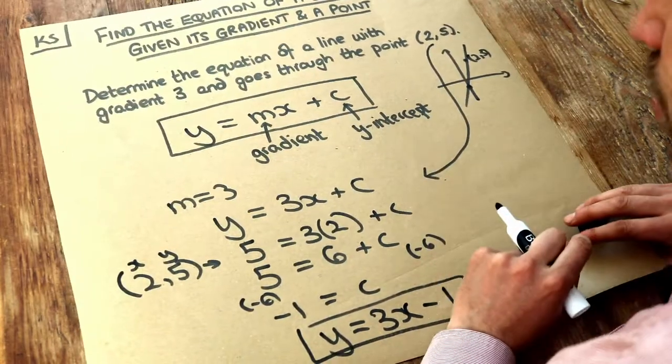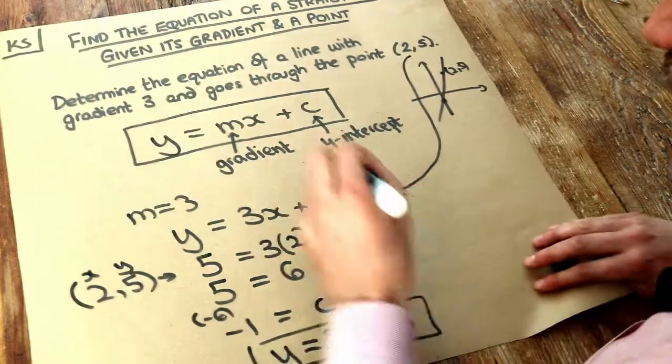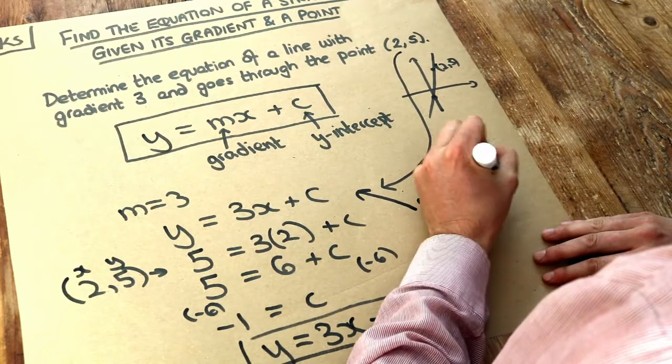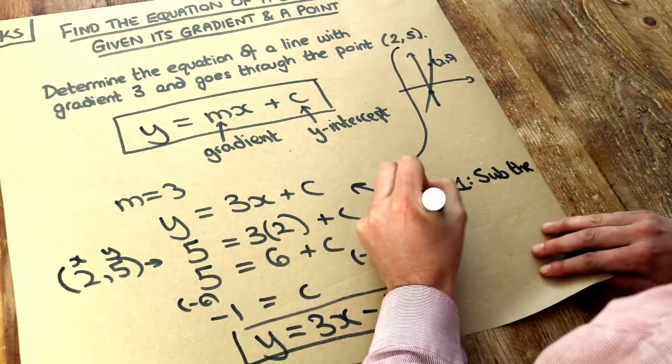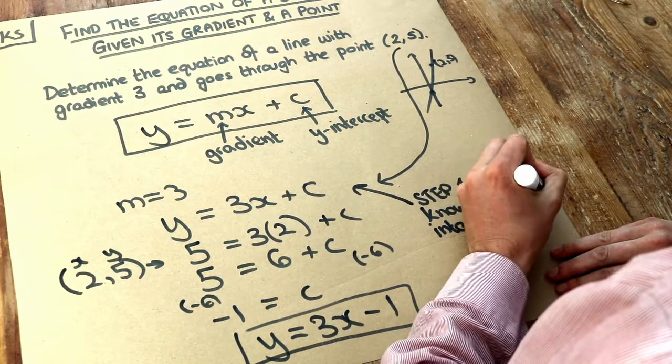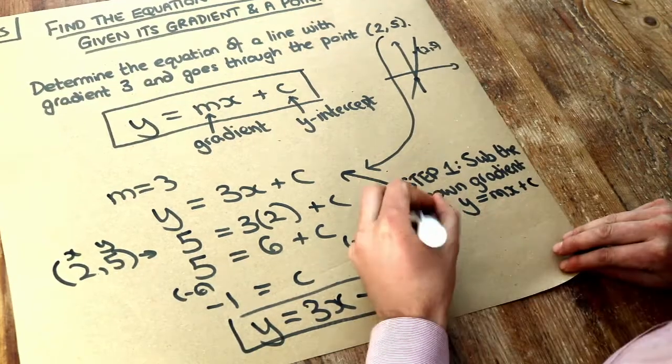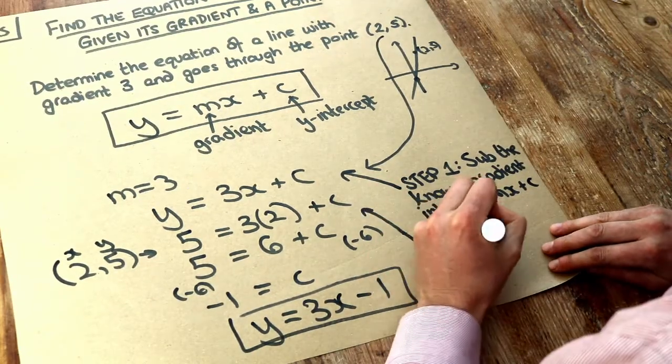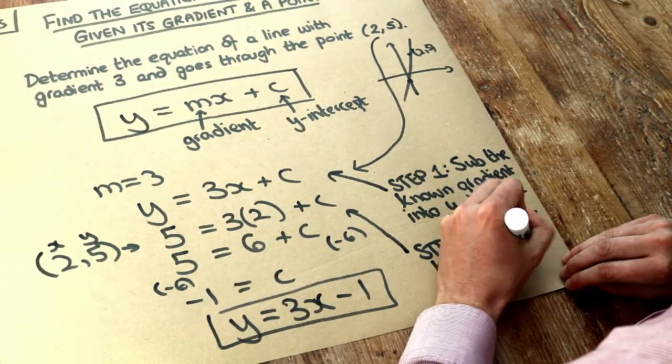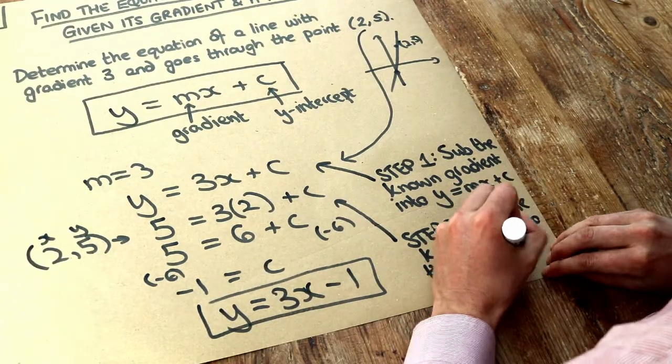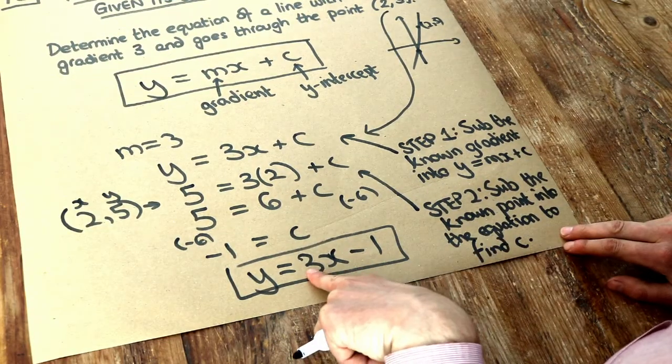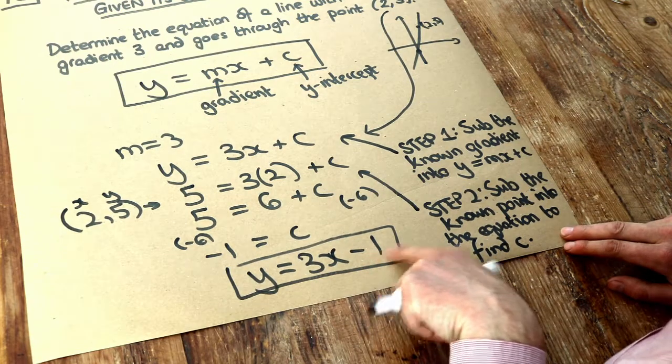So just to summarize what we did, if we know that the gradient is 3, step 1 is substitute the known gradient into y equals mx plus c. So we have y equals 3x plus c. Step 2 is to substitute the known point, this (2,5), into the equation to find c. And step 3 is just write out the equation again, but with the m and the c, in this case minus 1, into your equation.